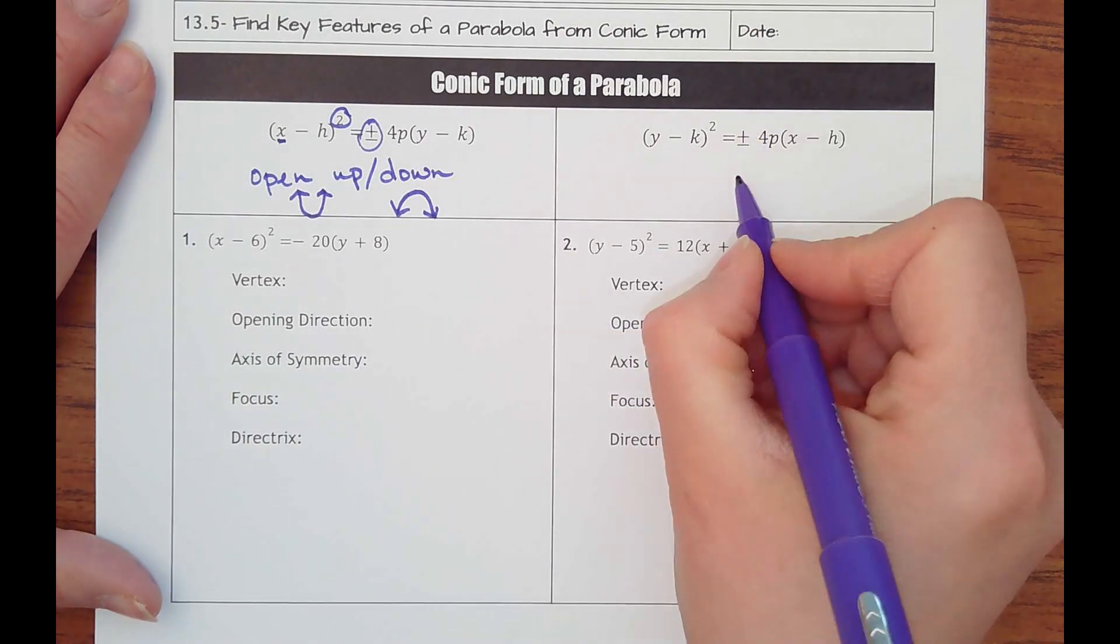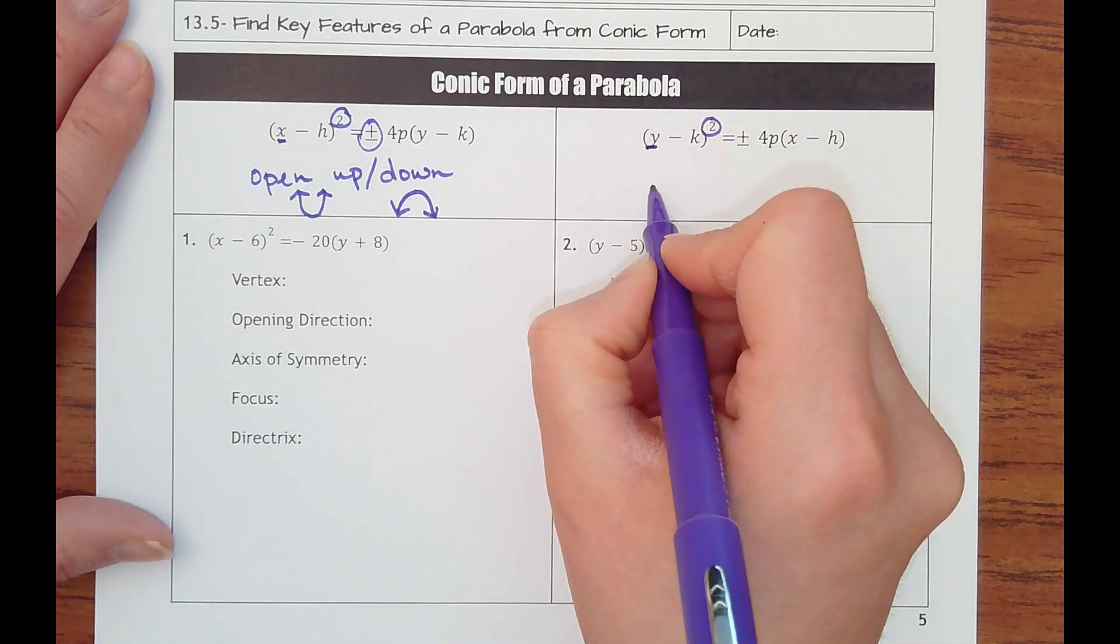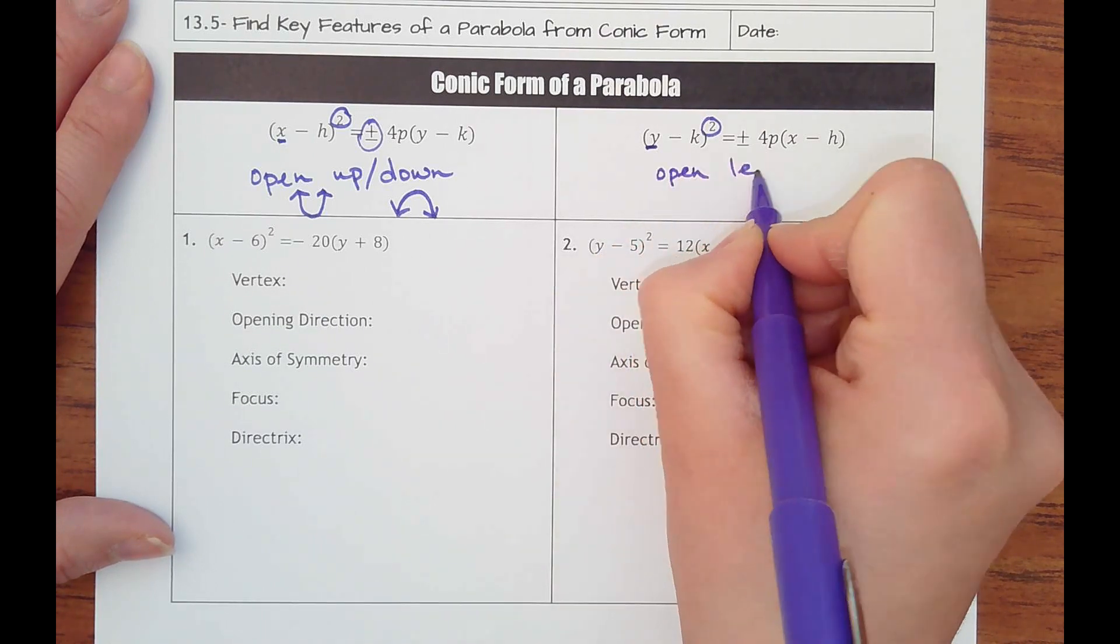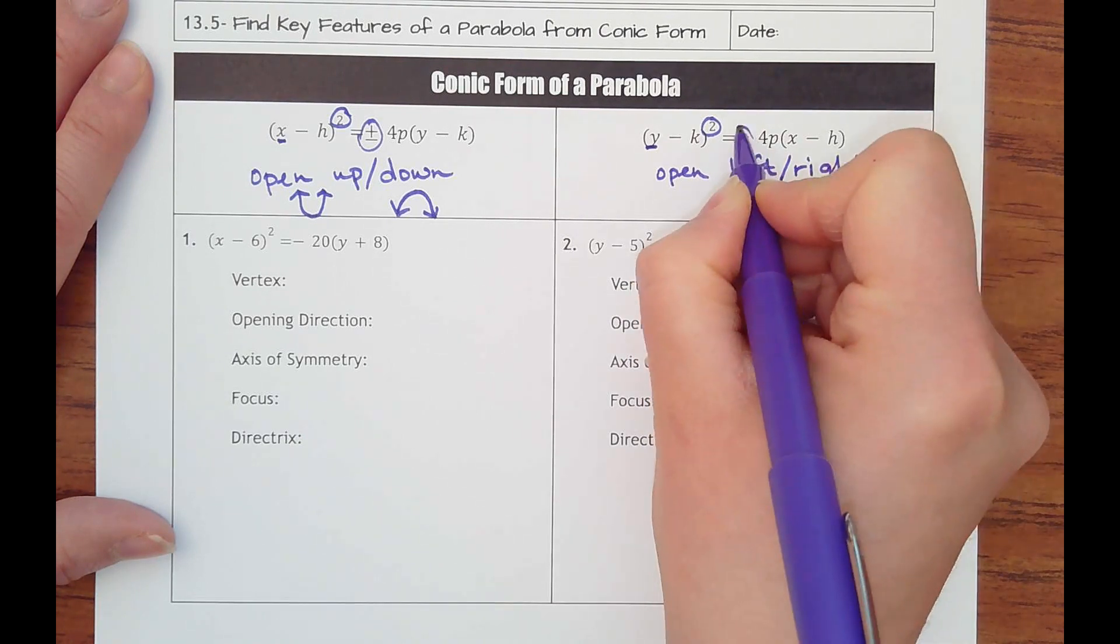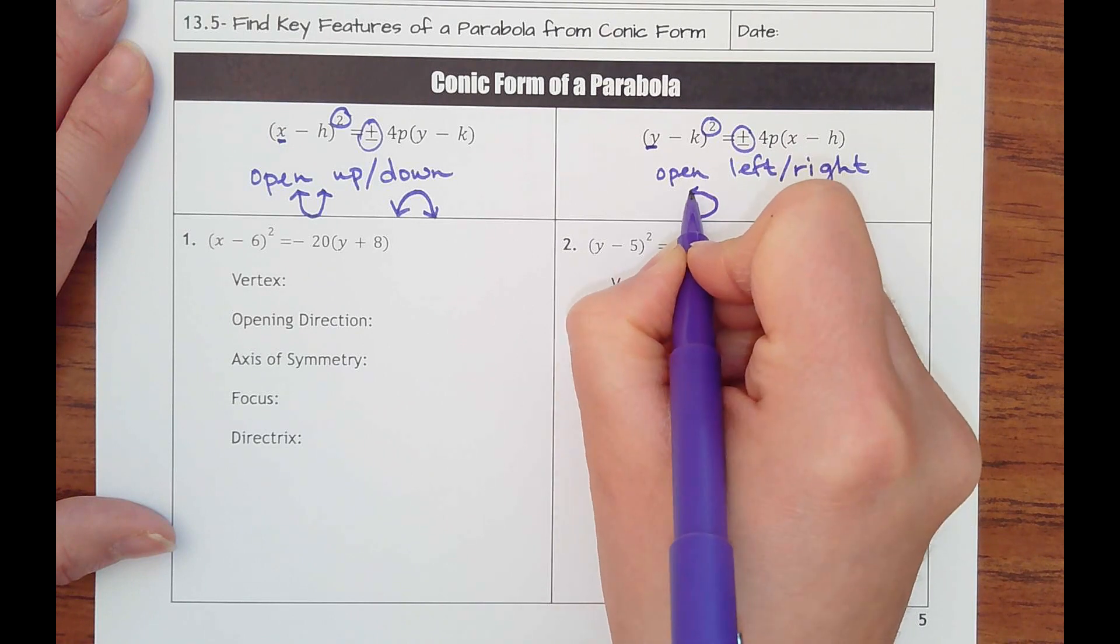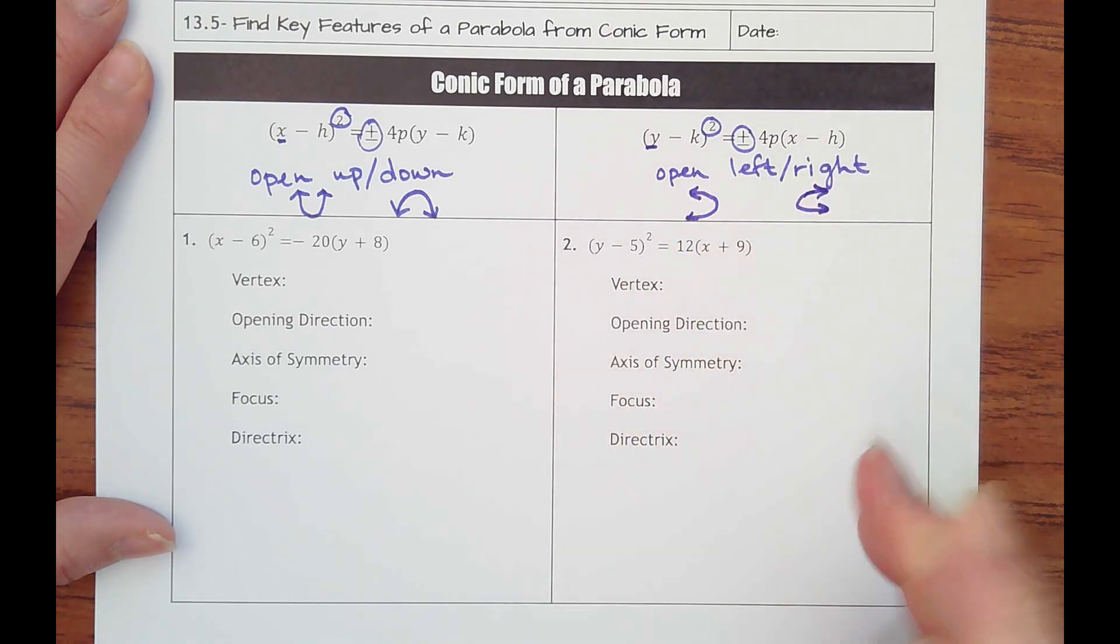And the other one is saying your y value is being squared, so it's got symmetry horizontally. So it's either going to open left or right, depending on the sign of this value here. So it's either going to open like this to the left or to the right.